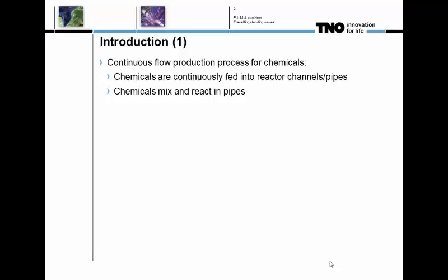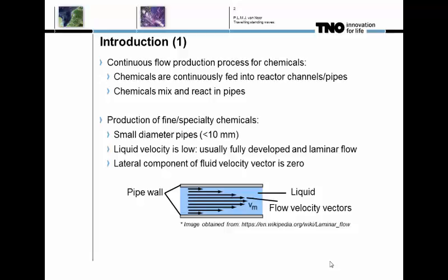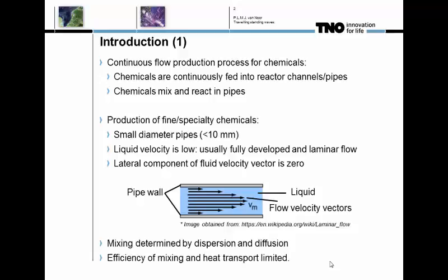In continuous flow production processes of chemicals, the chemicals are continuously fed into pipes where they react and mix — like a tubular reactor where you get your product at the end. For specialty chemicals, these pipes are usually very small, with diameters typically below one centimeter. The liquid velocity is therefore low, so the flow is usually developed and laminar, meaning the lateral component of the fluid velocity vector is around zero.